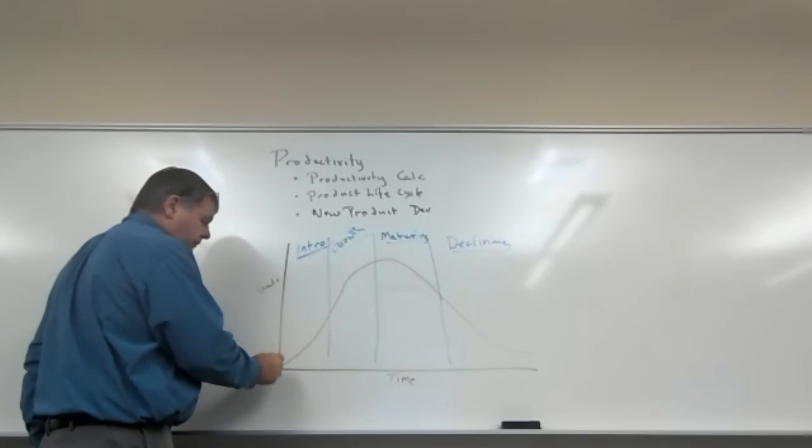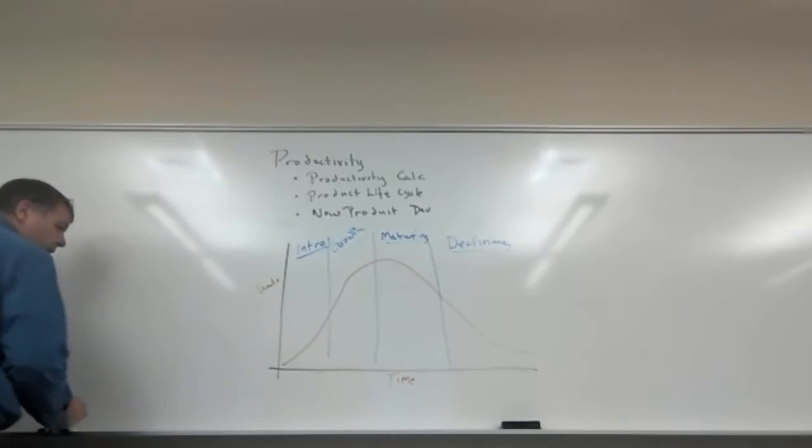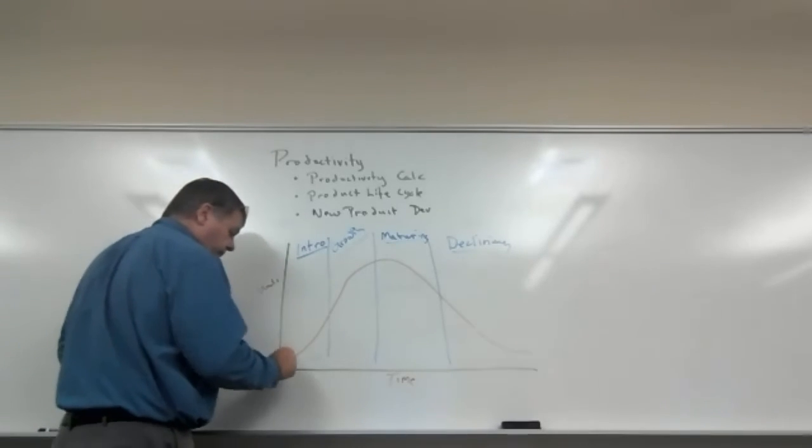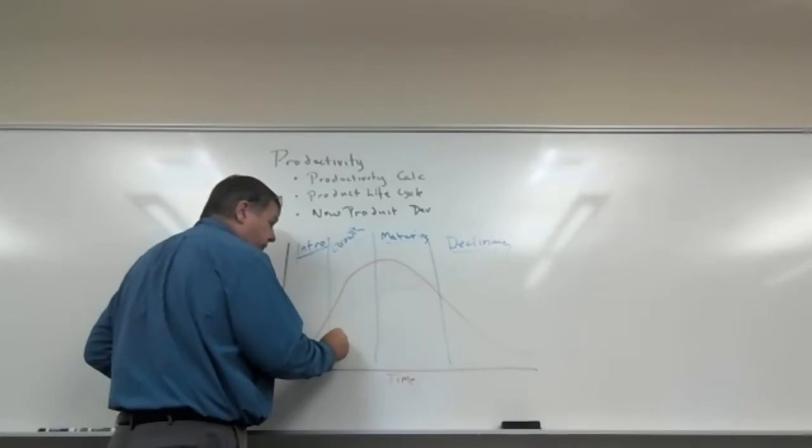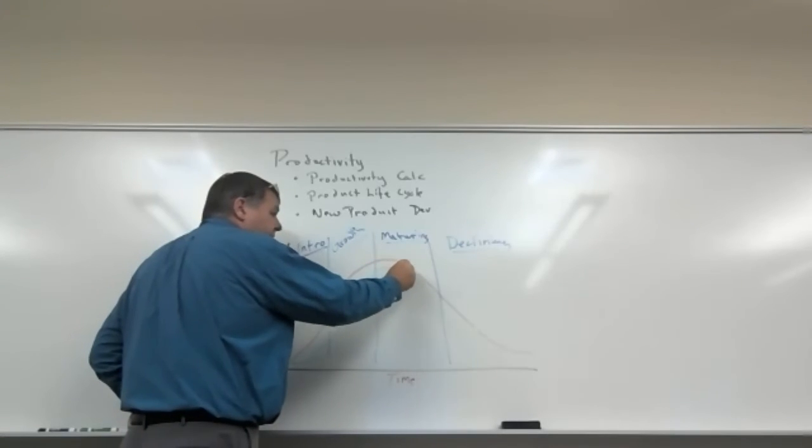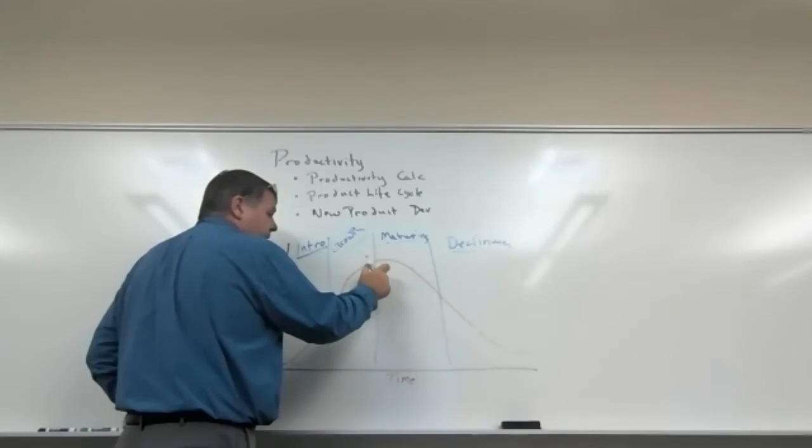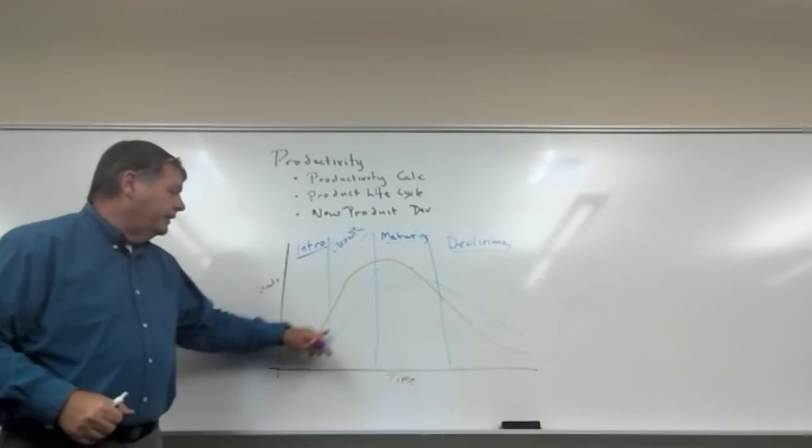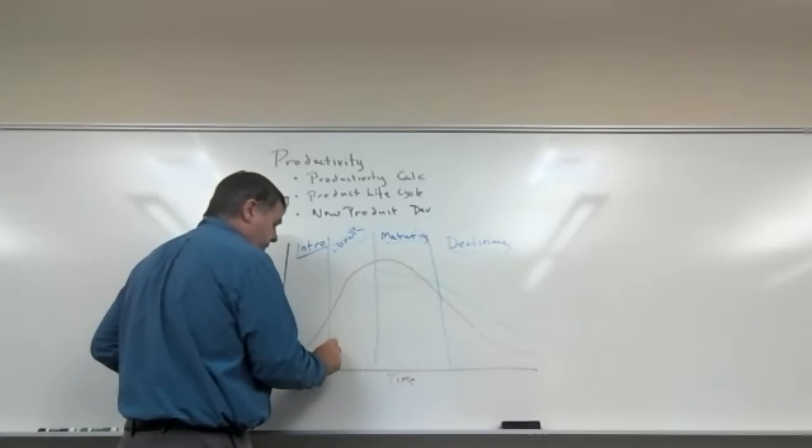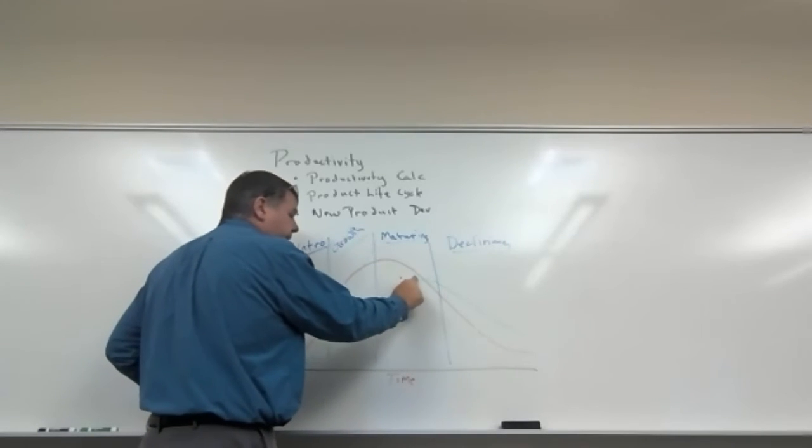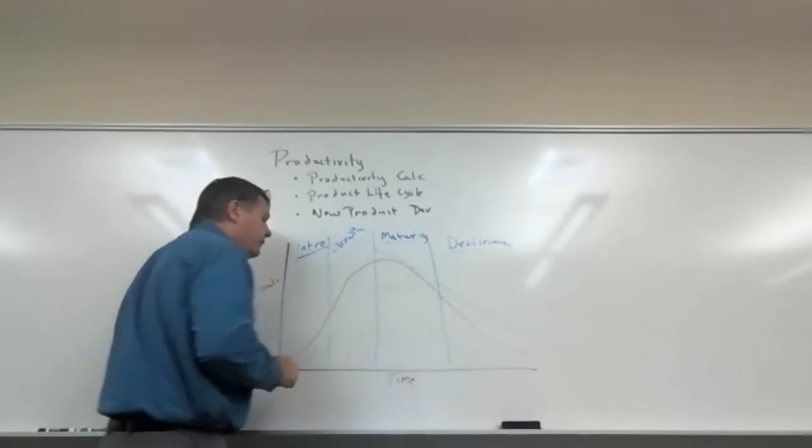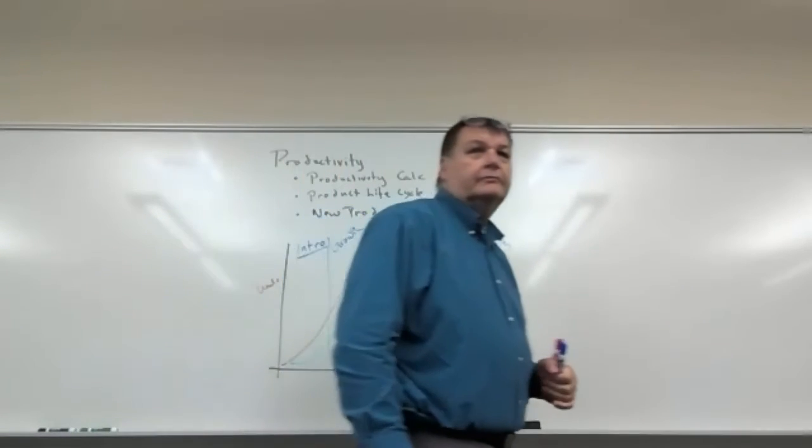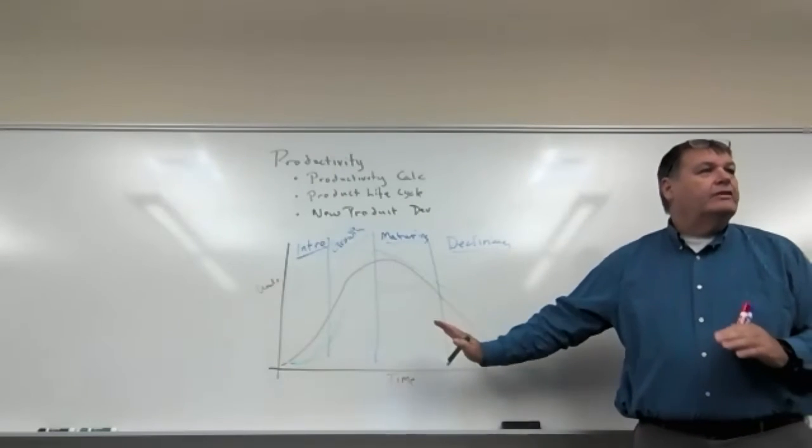So profitability, let's see if I can get a different color here. Profitability is low here. It starts to go up. It starts shooting up like this. Tends to flatten out during the maturing phase. Actually maybe even a little bit of a decline. And then it starts to drop off. It never goes below where we were. There is a, actually this should be above the line here, crosses over. Losing money, losing money to here, making money, making money, making money.